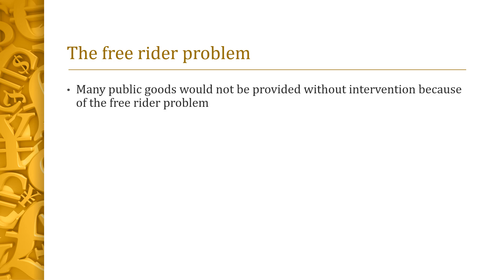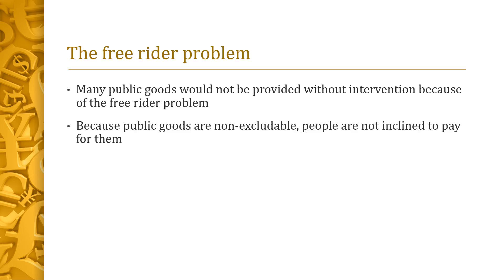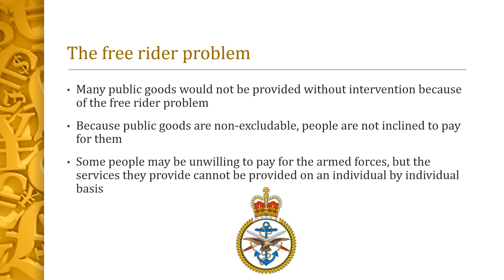Many public goods would not be provided without intervention because of the free rider problem. The free rider problem is the idea that public goods are non-excludable, and so people will get access to them if someone else pays for them, so they're not inclined to pay for them themselves. For instance, some people may be unwilling to pay for the Armed Forces because they disagree with their role in the world or what they do. But the services cannot be provided on an individual-by-individual basis. And as more individuals say they'd rather keep their money, they will end up unfunded and we will have no Defence Forces. The solution to this market failure is for the government to step in and take care of Defence.